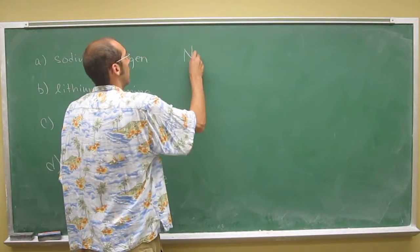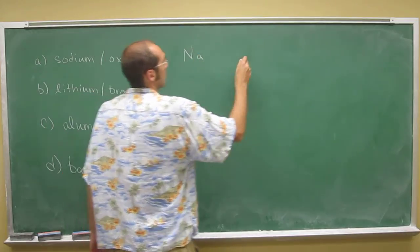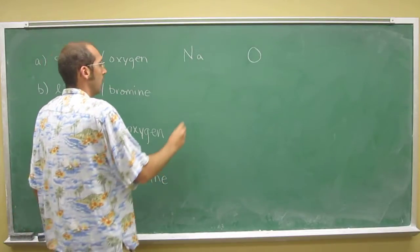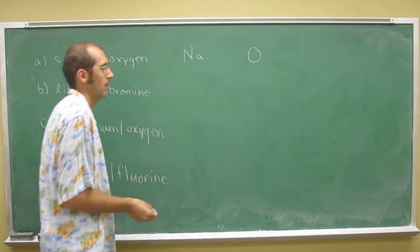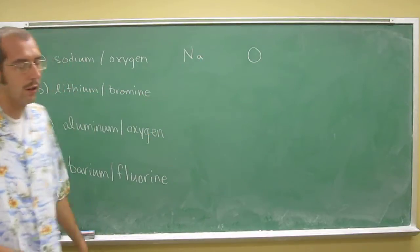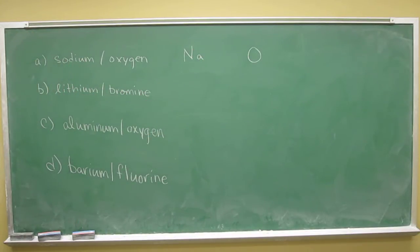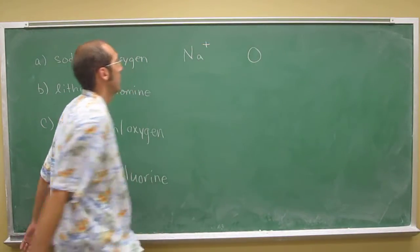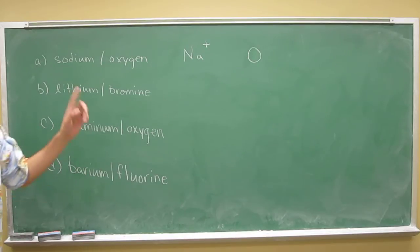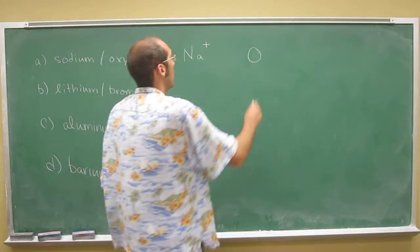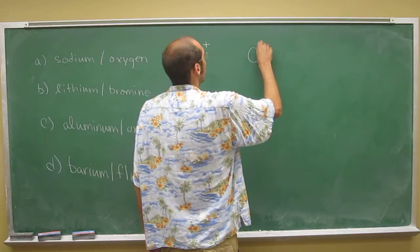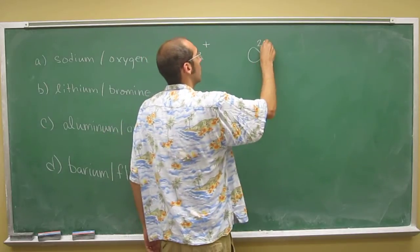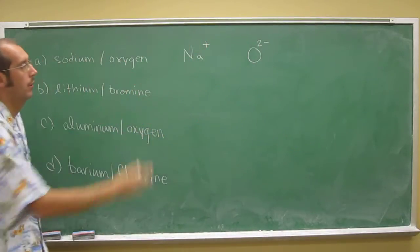So sodium is Na and oxygen is O. Let's write the elements and then we'll write what charges you would expect them to have. Sodium is group 1, so you would expect it to have a positive 1 charge, and oxygen is group 16, so you would expect it to have a negative 2 charge because it's 2 away from the noble gases.